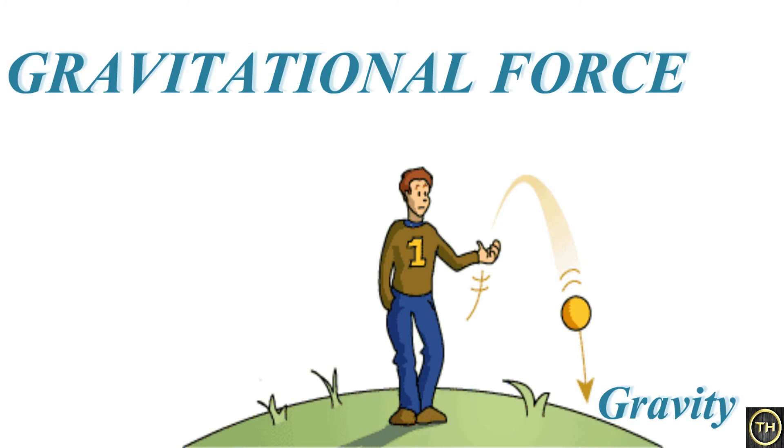The earth pulls all the objects towards itself with the help of this force. If any object is there, if we throw it up, it doesn't stay up, it comes down. If we keep something down, it stays down. It is not floating. Why is it not floating? Because one type of force is pulling. Earth has one power which is pulling down. That is called gravitational force. The force applied by the earth to pull the objects towards itself is called gravitational force.